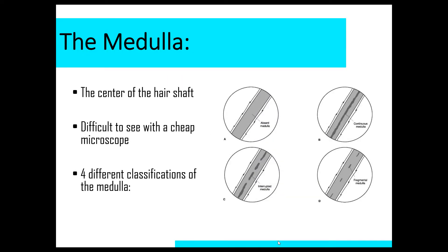And then the very inside or core portion of the hair shaft is the medulla. So the medulla can be difficult to find when looking at a hair sample with a cheap microscope, but if you have a pretty good microscope, you might be able to see the different medulla patterns. Now there are four different classifications of medulla patterns, and you can see in this picture we have absent, which means no medulla, you have a continuous medulla, which is like just a straight line down the middle of the hair, you can have an interrupted medulla or a fragmented medulla. So you see the different variations.